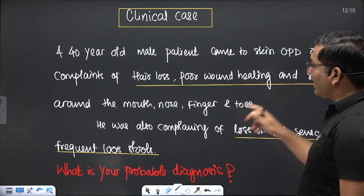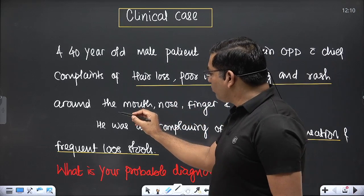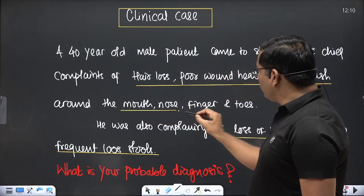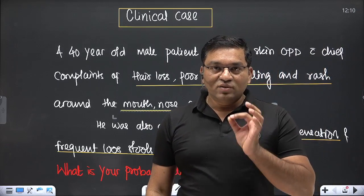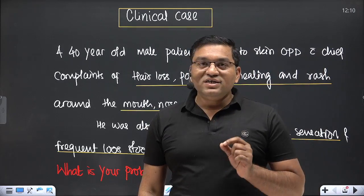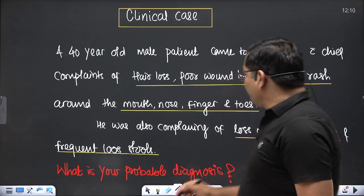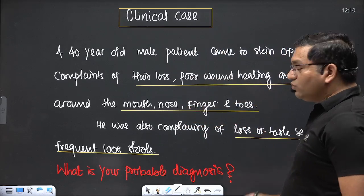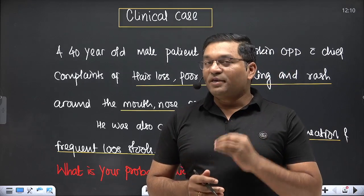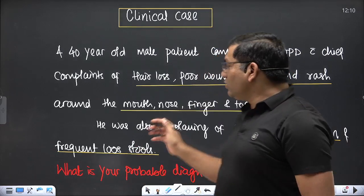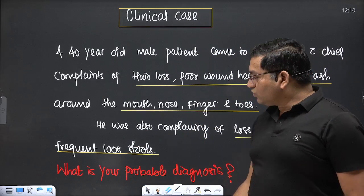Hair loss, poor wound healing, and rash around the mouth, nose, fingers, and toes — this involvement of the acral parts of the body is very important. It is typically seen in acrodermatitis enteropathica. This is a zinc deficiency case, as loss of taste sensation and frequent loose stools are also present.